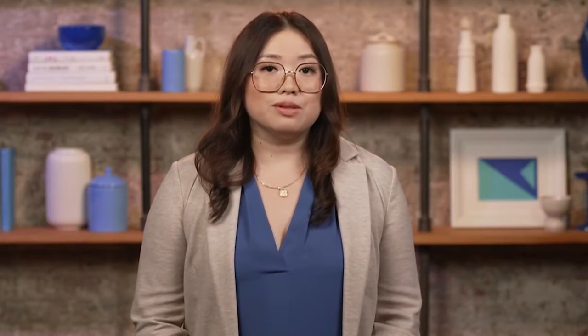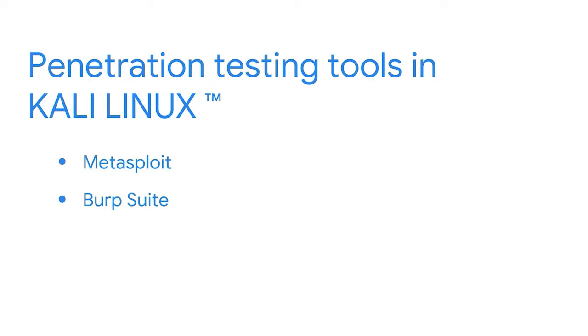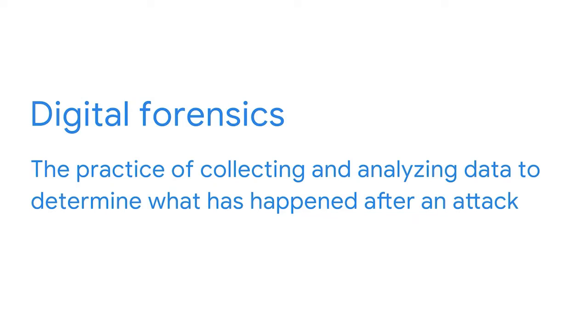Kali Linux has numerous tools useful during penetration testing. Metasploit can be used to look for and exploit vulnerabilities on machines. Burp Suite is another tool that helps test for weaknesses in web applications. And John the Ripper is a tool used to guess passwords. As a security analyst, your work might involve digital forensics — the practice of collecting and analyzing data to determine what has happened after an attack. For example, you might take an investigative look at data related to network activity. Kali Linux is also a useful distribution for security professionals involved in digital forensic work.